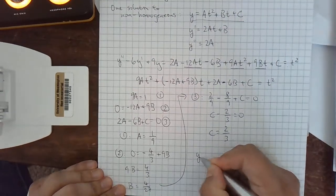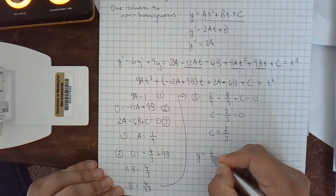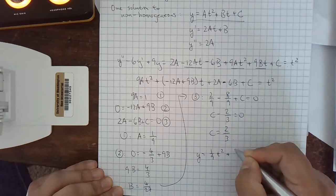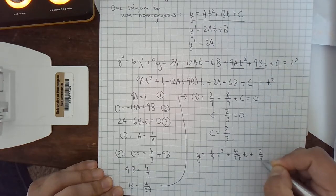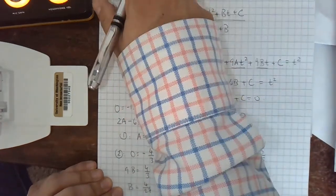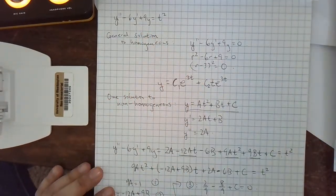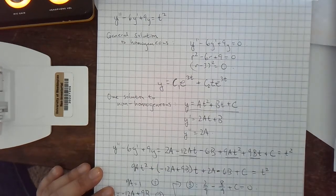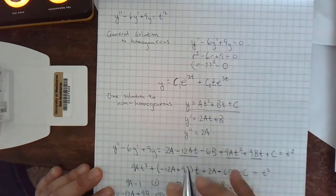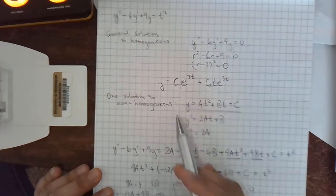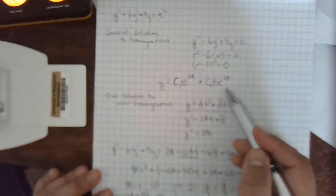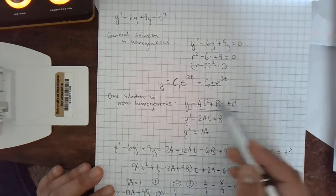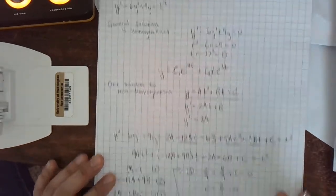So the solution is y equals 1 ninth t squared plus 4 27ths t plus 2 thirds. I've guaranteed that this is going to satisfy the differential equation. And then the theory of the method says that my general solution to the non-homogeneous differential equation is going to be the general solution to the homogeneous equation plus any one solution to the non-homogeneous one.